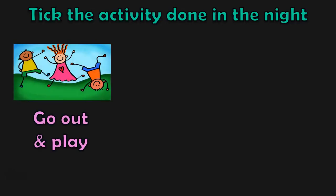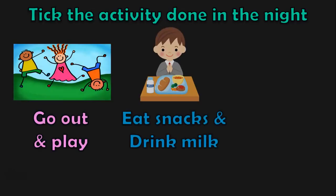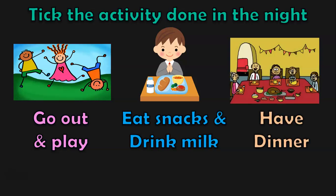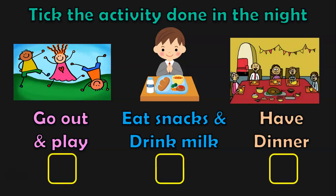Now, take the activity done in the night. The options are: go out and play, eat snacks and drink milk, or have dinner. Which is the activity done at night? Have dinner is the correct answer.